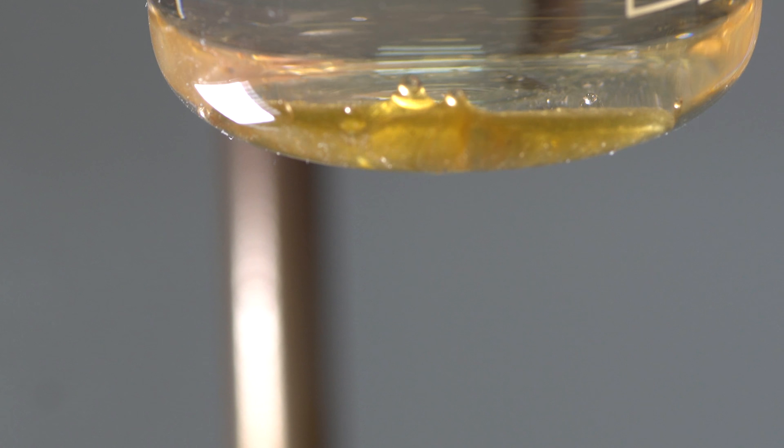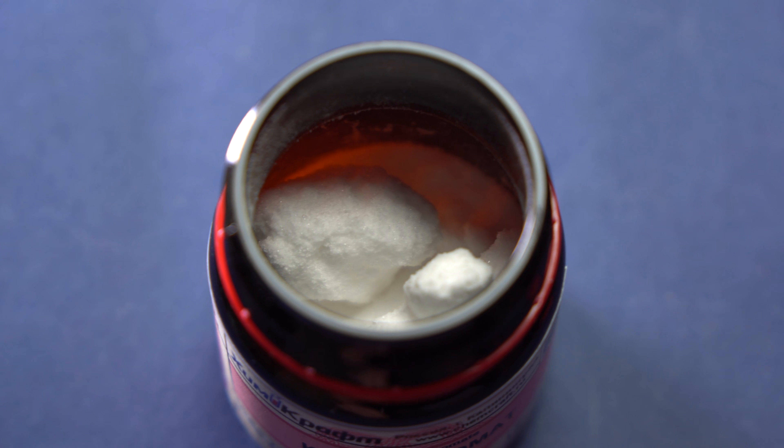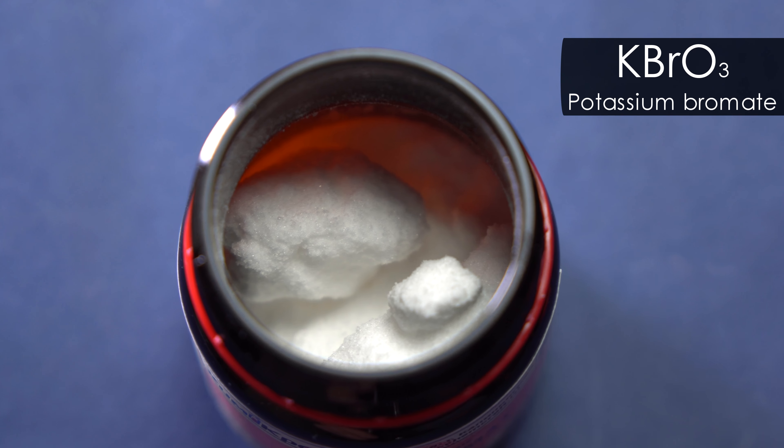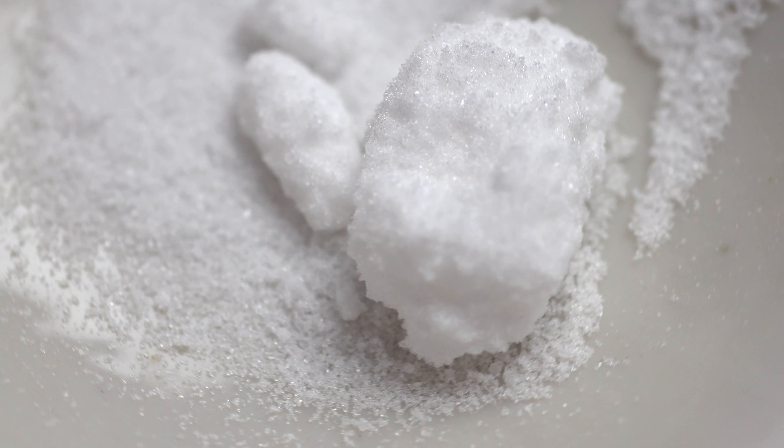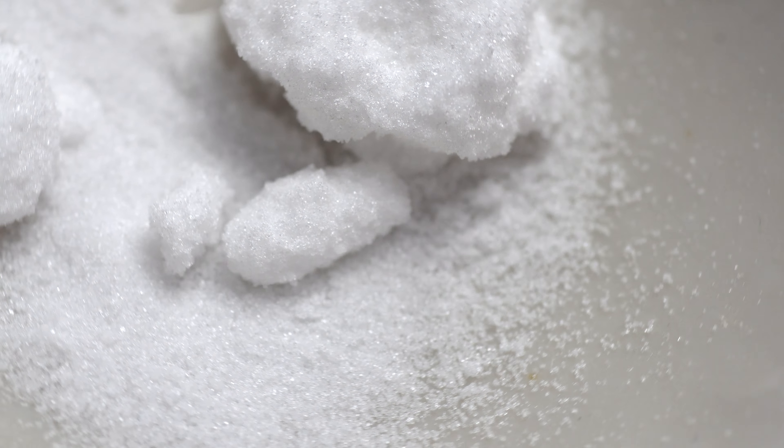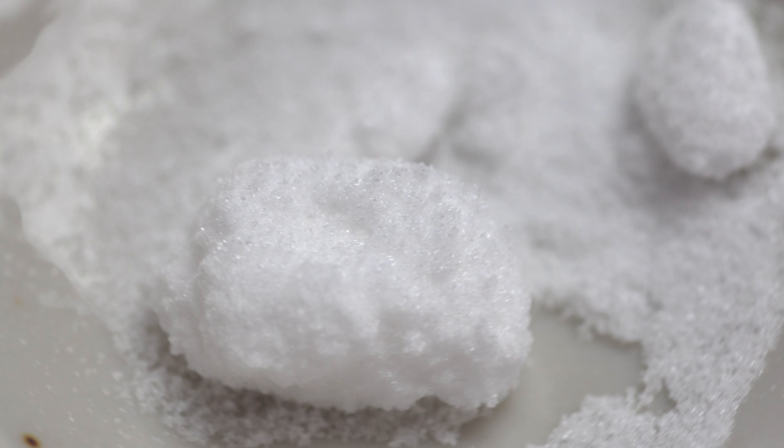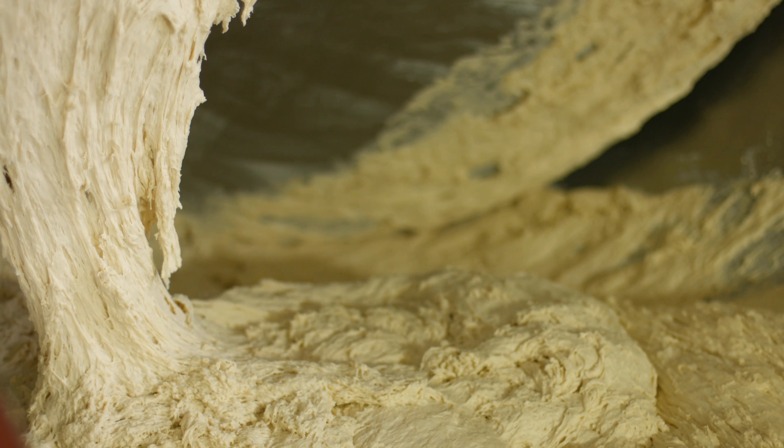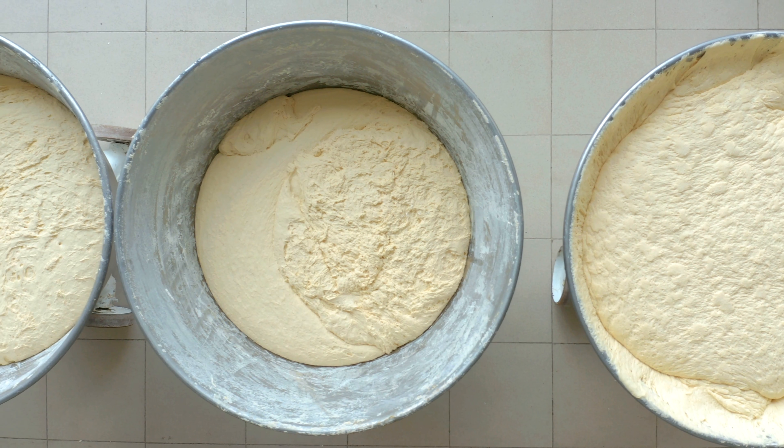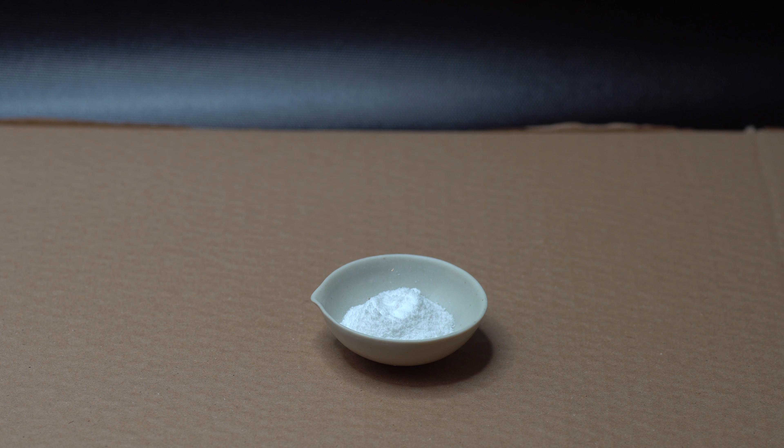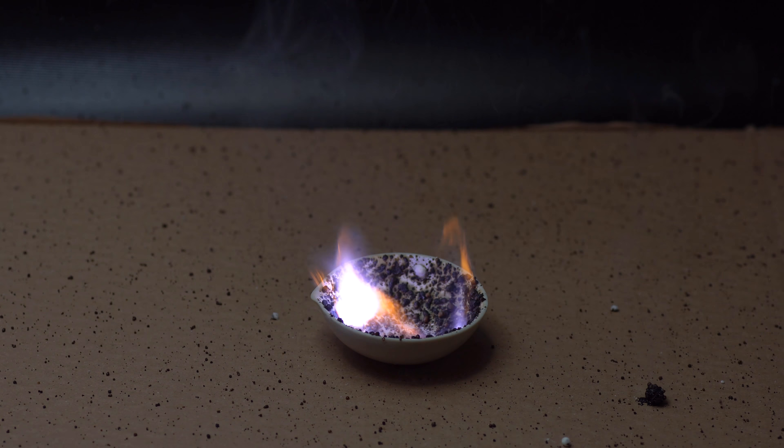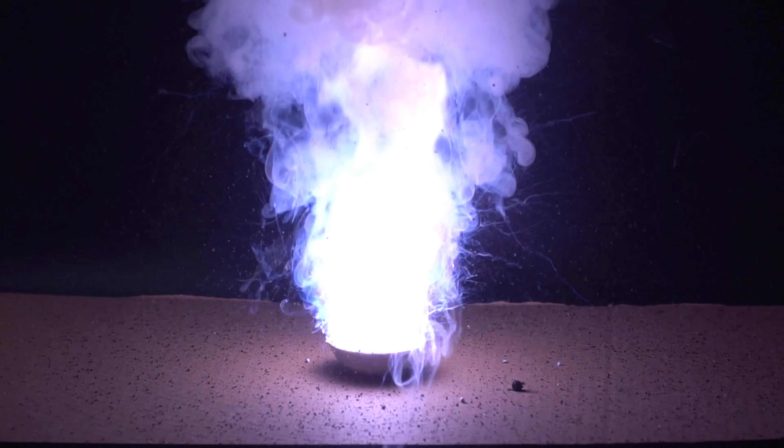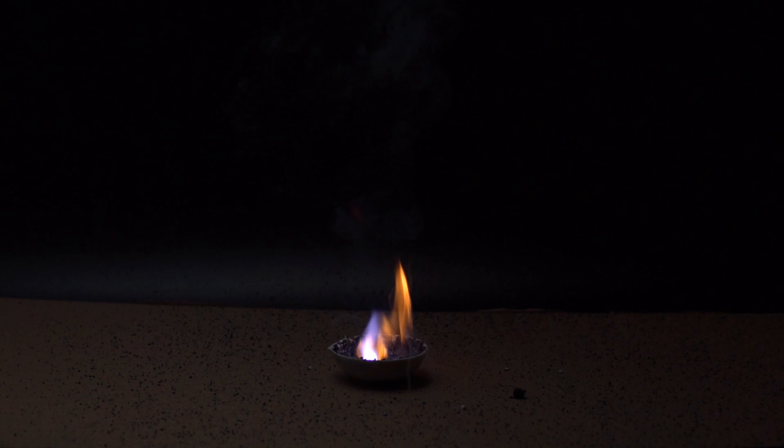In the end, I would like to show you a reaction with a bromine compound, potassium bromate. Although this substance is pretty toxic and also carcinogenic, and in some countries, for instance in the United States, it is used as a food additive to improve the texture of dough, for instance when baking bread. If we mix this chemical with sugar and add a drop of concentrated sulfuric acid, the mixture will self-ignite and will be burning with a bright pink and blue flame.